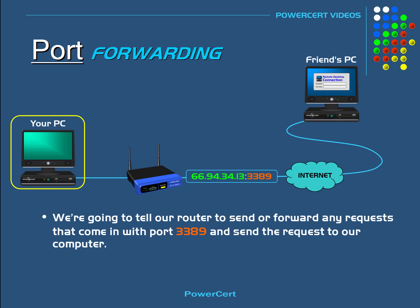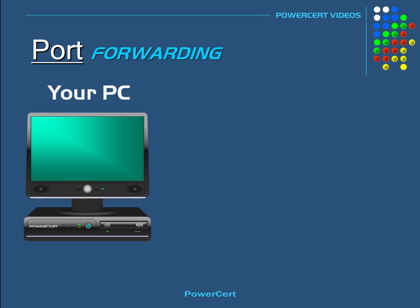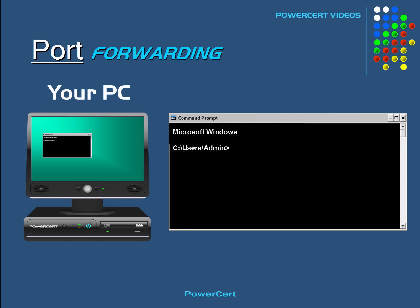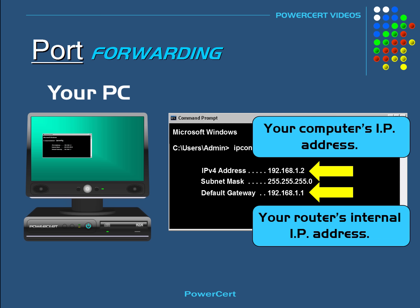To do this, we're going to log in to our router's configuration page by typing in the router's internal IP address using a web browser. If you're not sure what your router's internal private IP address is, open up a command prompt on a Windows computer and type in ipconfig and press enter. The default gateway is the internal IP address of your router. It's also important to know your computer's IP address, because we're going to be entering that in the port forwarding configuration page.